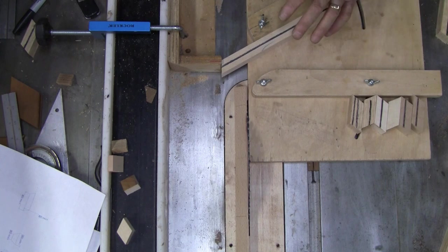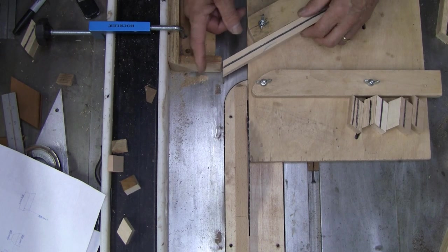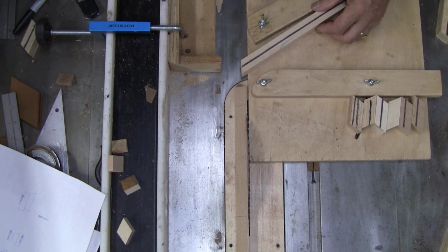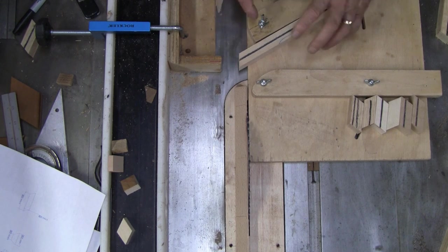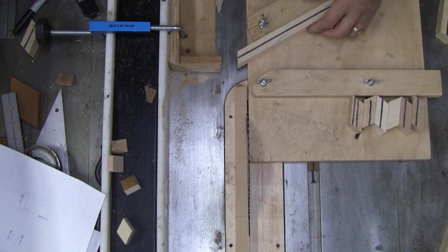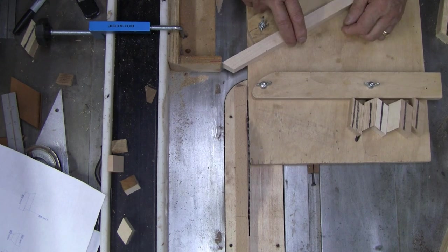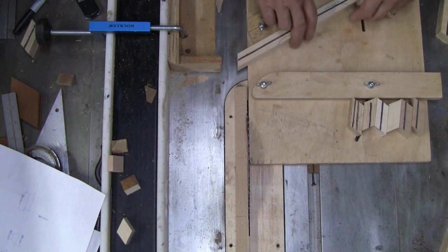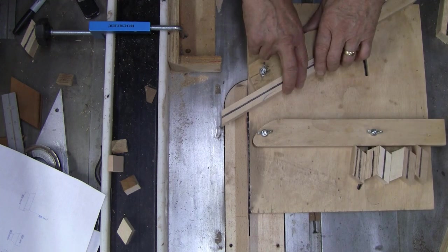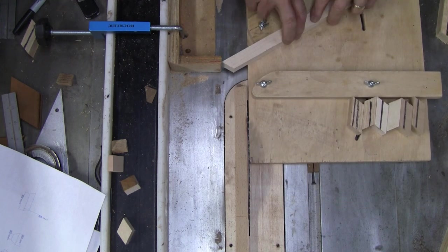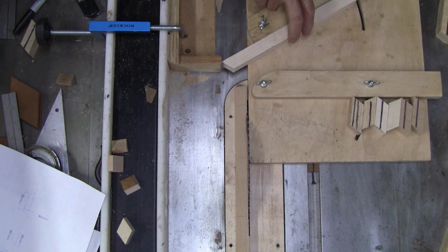It's still set up the same way. This is something to pay attention to and remember. When you cut the trapezoids, you just flip that same piece over and use the same stop. Going this direction makes the parallelogram. If you turn it over, you're going to make the trapezoid.